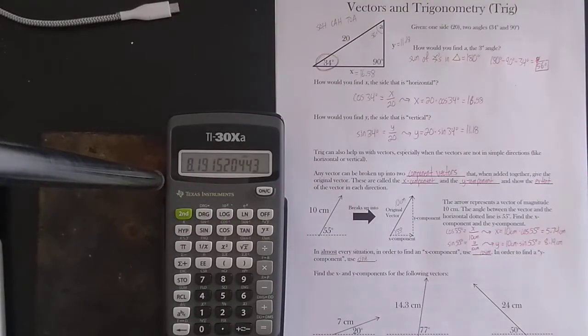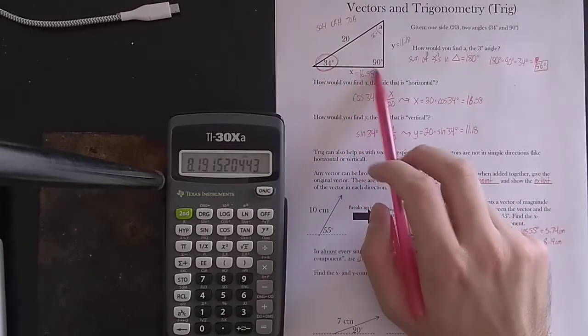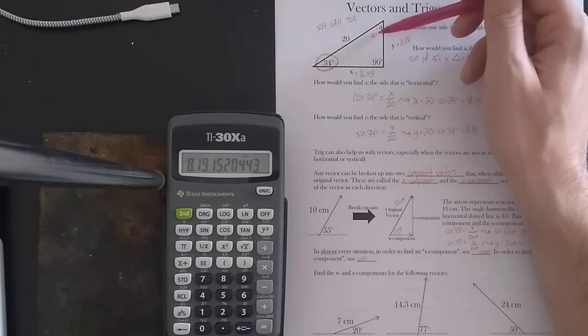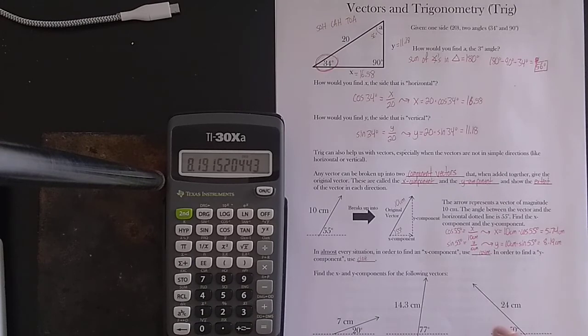The only time that that is not true is if you have a vector that is not measured relative to a horizontal line. For example, if you want to calculate using this vector, which is measured relative to a vertical line right here. But we're not going to have too many of those. Just keep on the lookout for it. And in that case, you can't assume that cosine and sine are going to be x and y, respectively.